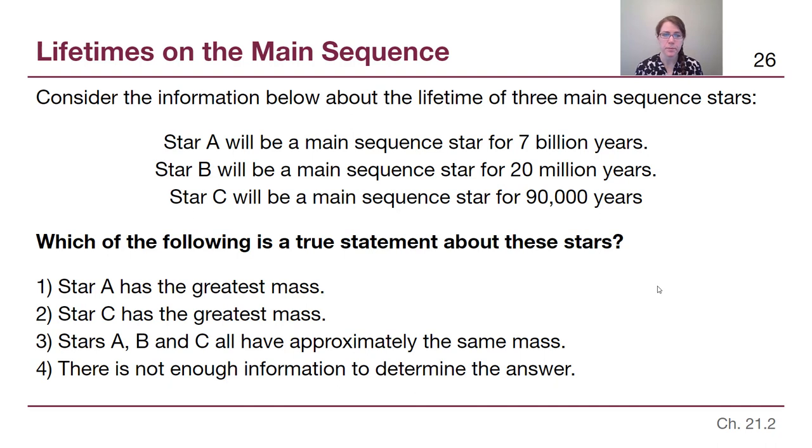All right. Now, high mass stars go through their lives much faster. Star C has the greatest amount of mass, option two here. And notice I didn't need to tell us anything else about those stars. I didn't need to tell us their temperature or their luminosity or anything. The lifetime is based entirely on the mass. So star C has the most mass, star A has the least mass, but even star A has a shorter lifetime than the sun. So star A has a little bit more mass than the sun does.